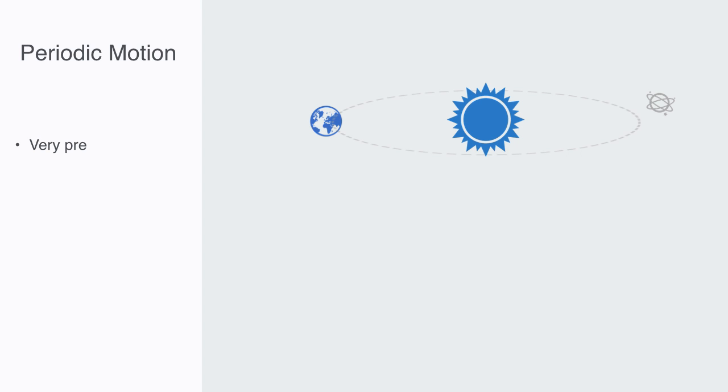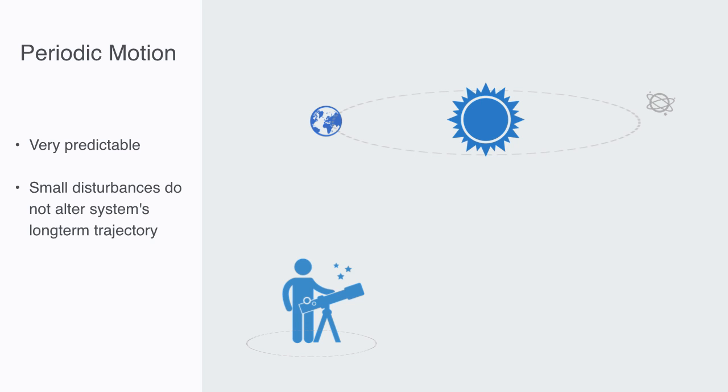Next, we might imagine some periodic motion, for example, the motion of the planets around the sun is periodic. This type of periodic motion is of course very predictable. We can predict far out into the future and way back into the past when eclipses happened. In these systems, small perturbations are often rectified and do not increase to alter the system's trajectory very much in the long run.